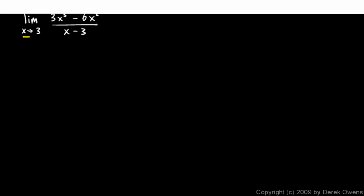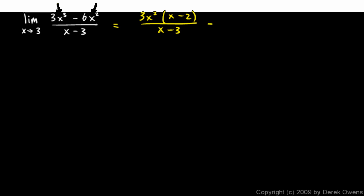So the first thing to try is to take this value, x equal to 3, and plug it in for the variable x into this expression. This might be a little bit easier to do if we factor it first. This will factor as 3x squared times x minus 2 over x minus 3.